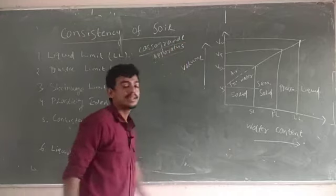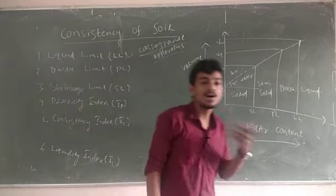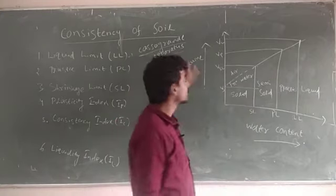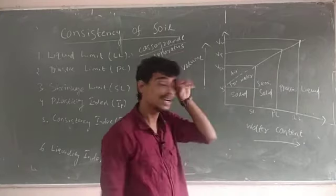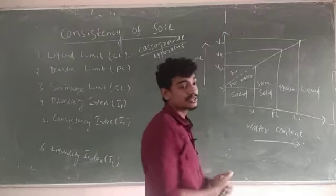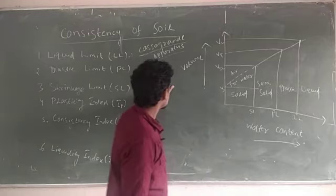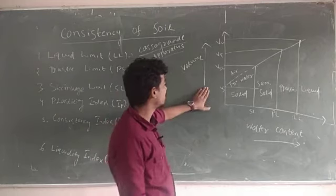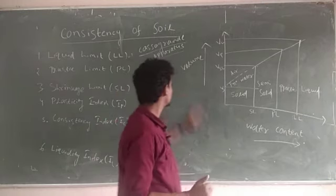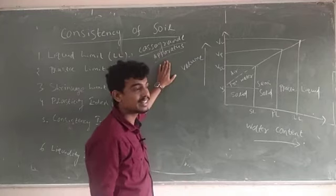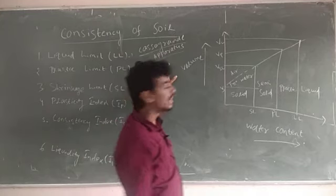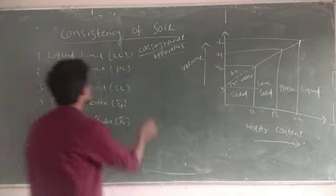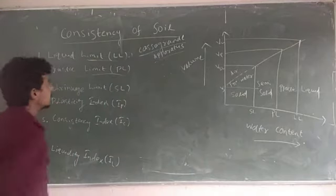Liquid limit is determined using the Casagrande apparatus. This uses the ASTM tool — American Society for Testing and Materials. It is not required in detail since it is not in the syllabus; just remember that the Casagrande apparatus is used for determining liquid limit.